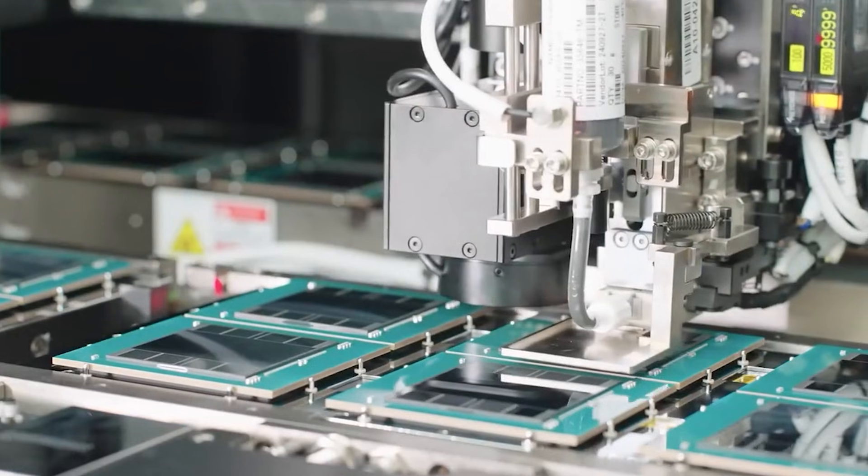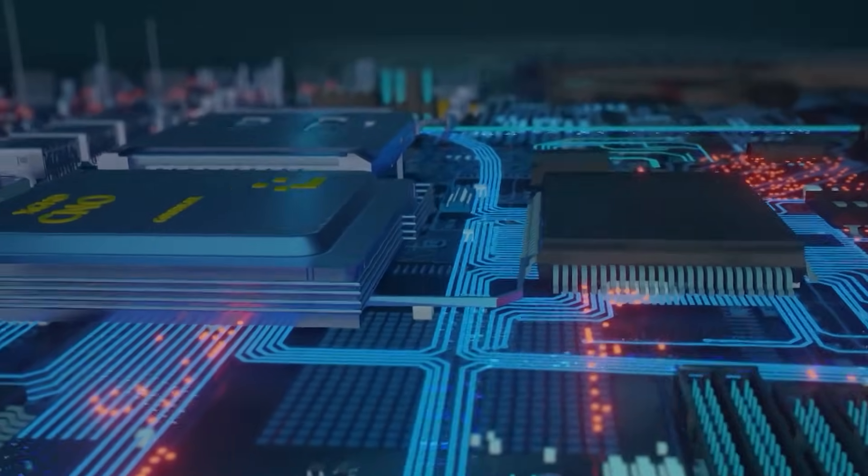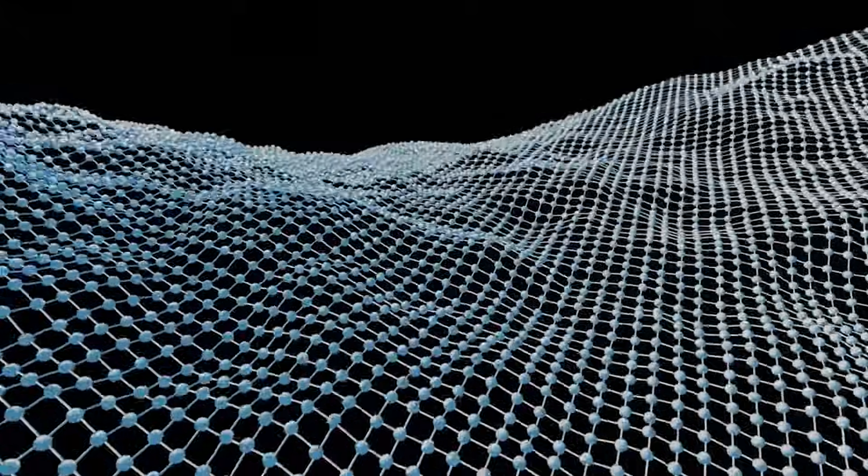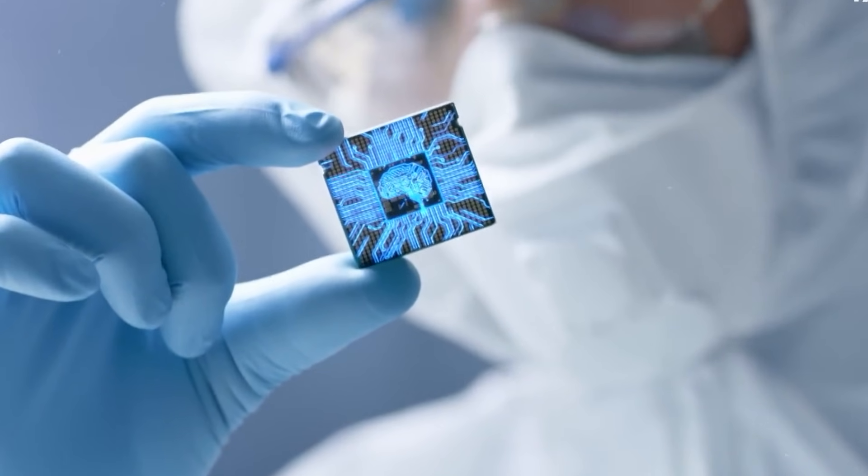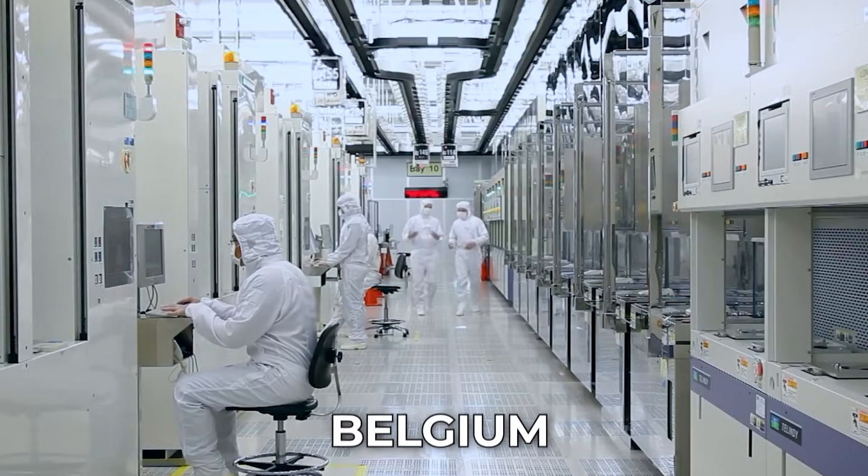Chips may soon become vertical structures, glowing with light instead of electric signals, and built from materials just a few atoms thick. None of this is certain, but it all begins in this quiet place in Belgium.